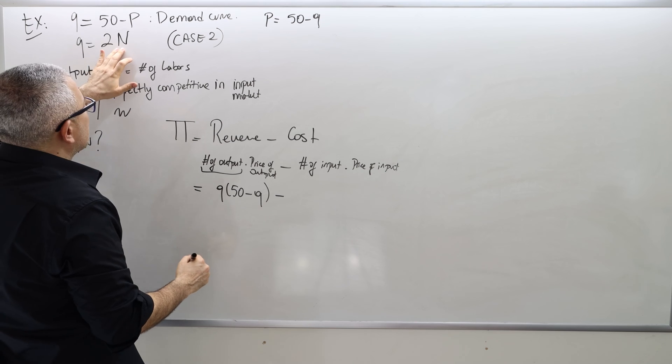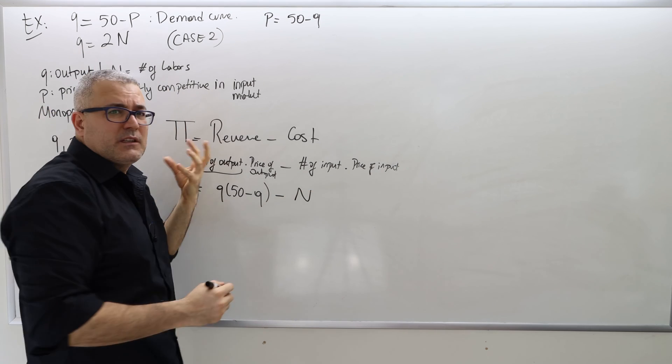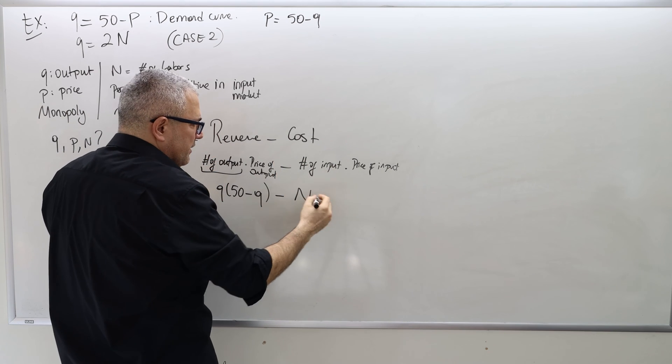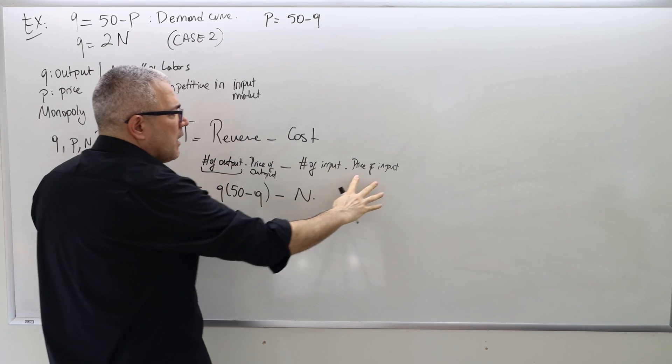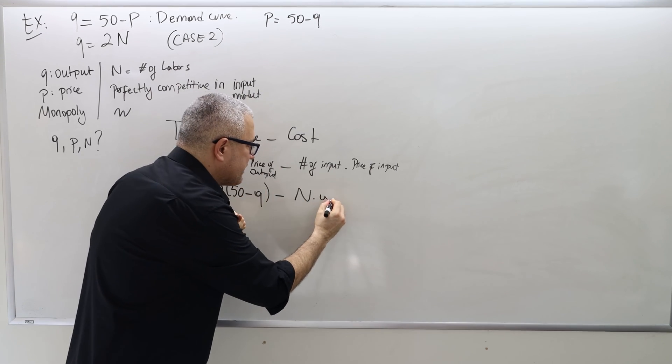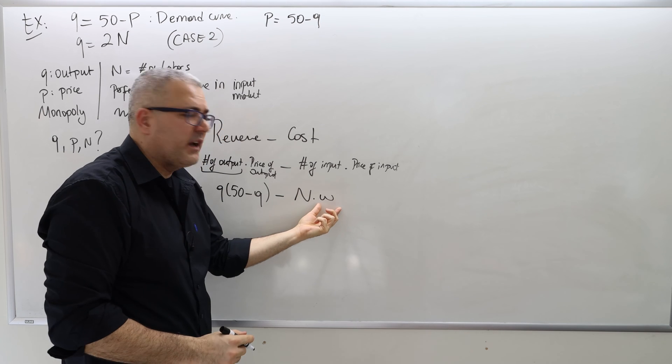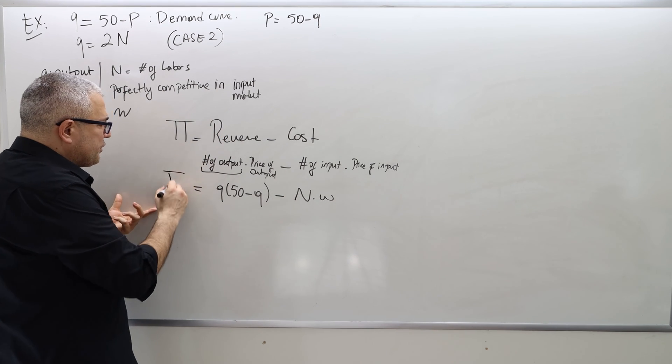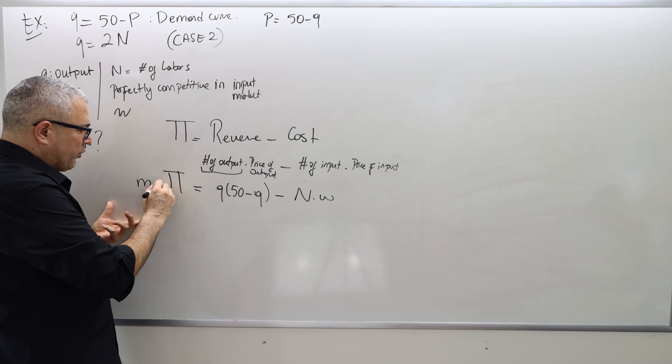But it's not given because the firm is monopolist. So the P is, just use the inverse demand. So basically, I invert this function, send P to the left-hand side and Q to the right-hand side. So 50 remains where it was. So that's the inverse demand. So the P, P of Q. That's the revenue. Minus the cost, the number of input. What is the notation for the number of input? N. In this particular question, the labors are denoted by N. N many workers. What is the price of input? Well, the firm is competitive, so it takes price as given, and the wage is denoted by W.